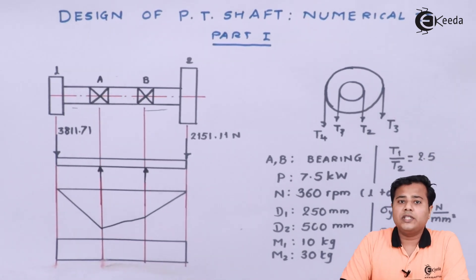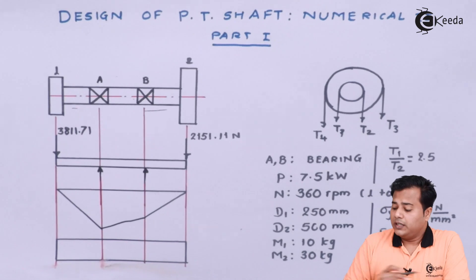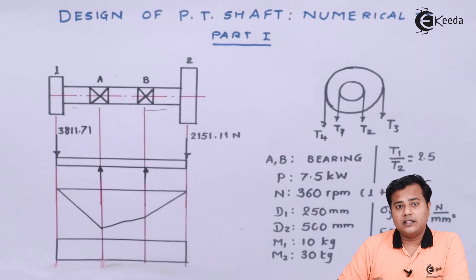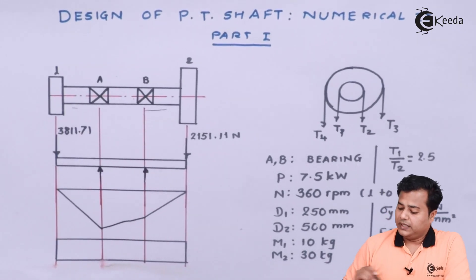So in short the loads acting on the shaft are all in downward direction. Plus if the weights of these pulleys are considered then those weights should also act vertically downwards.